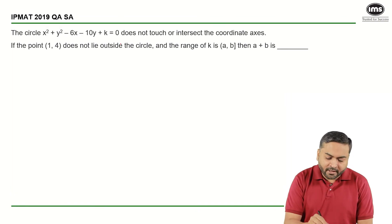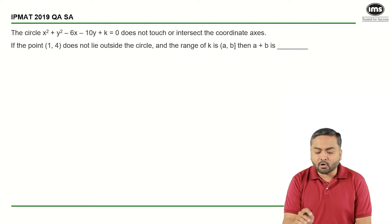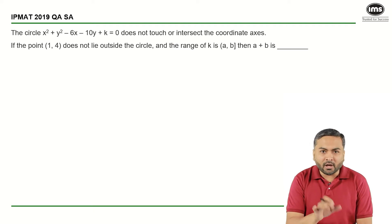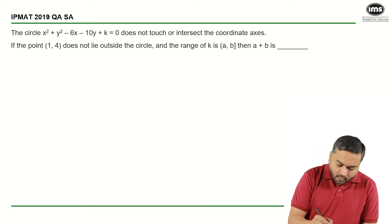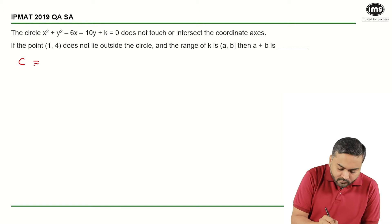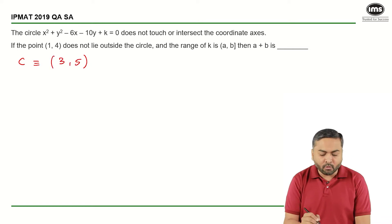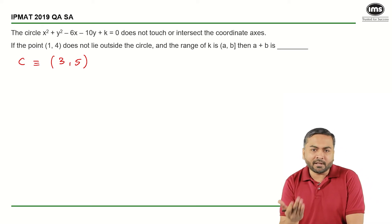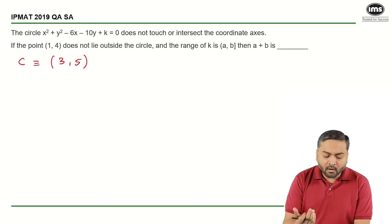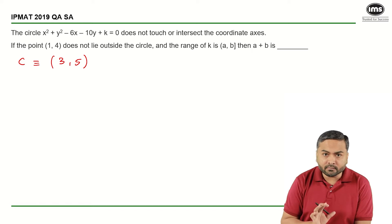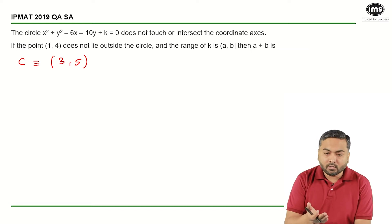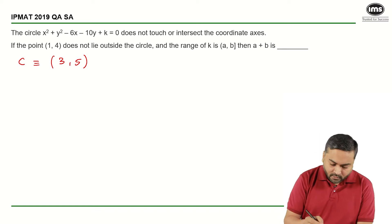So there's a circle given and it says that it does not touch or intersect the coordinate axes. What does that mean? It should lie in one of the quadrants. Now, from the center of the circle that is 3 comma 5 (minus 6 upon minus 2 comma minus 10 upon minus 2), I can find out that this particular circle has to be in the first quadrant because it does not touch any of the axes.